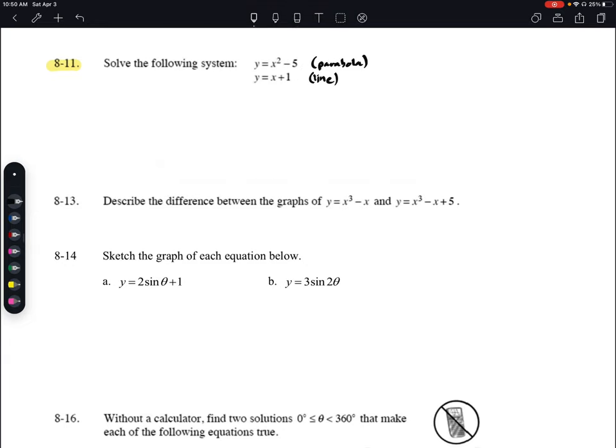If we think about a parabola that has been shifted down 5 units, and a line with y-intercept 1 and slope 1, this system of equations would give us two intersection points.